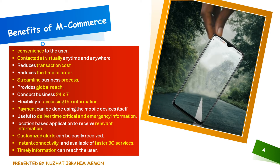M-commerce also streamlines business processes — 'streamline' means simple and efficient business processes. Mobile applications are faster, so customers can browse or purchase products faster on their mobile applications. M-commerce also provides global reach, meaning most people have a cell phone, so they can easily and conveniently use their mobile phone to do real-time transactions at any time and from any place across the globe — that is global reach.